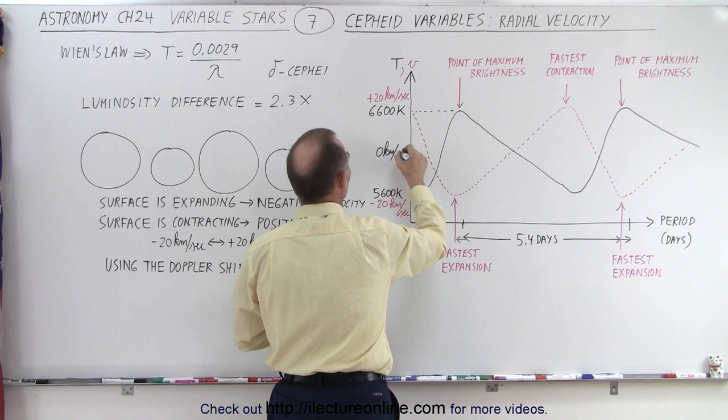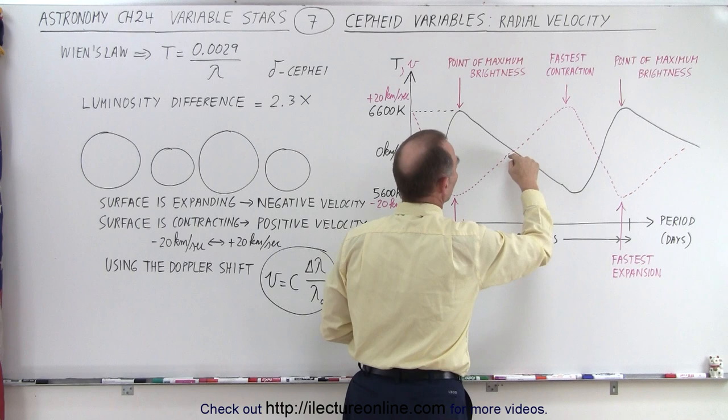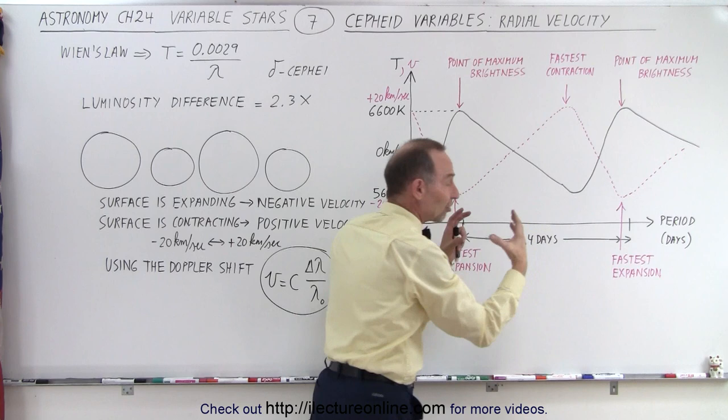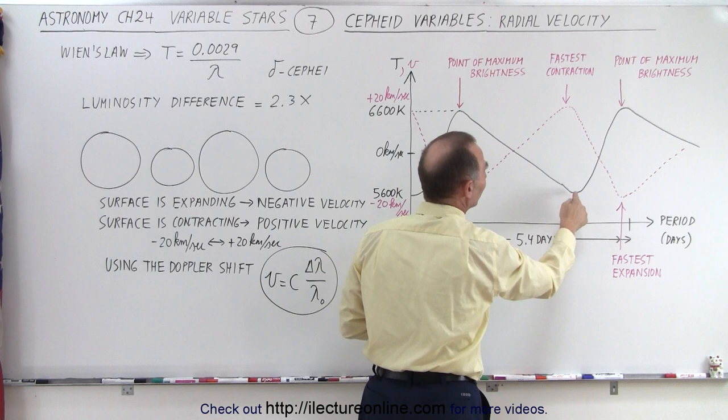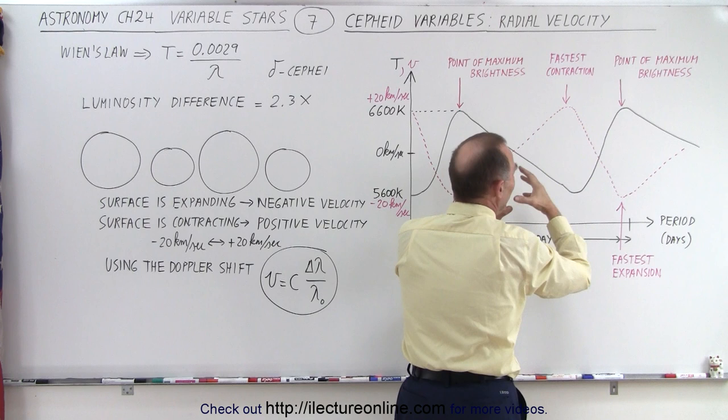So the star then comes to a stop, and then begins to shrink. And as it begins to shrink, so this is where the star is shrinking in size, and when it reaches its fastest contraction, it's not yet at its smallest size. At that point, it is at its dimmest. Then, the star begins to get bright again, the contraction slows down, and then it begins to expand again.